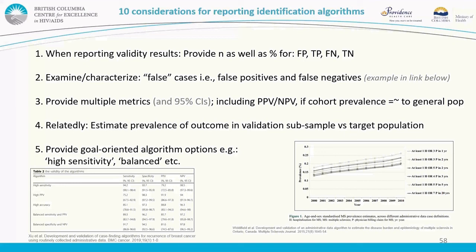Finally, when reporting identification algorithms, the first consideration is to provide both the count and the proportion for false positives, true positives, false negatives, and true negatives when reporting validity results.